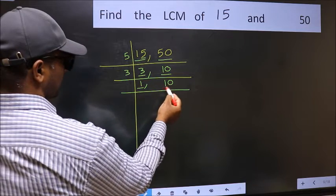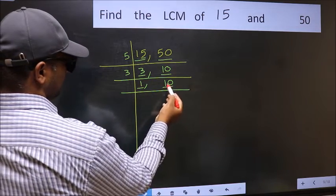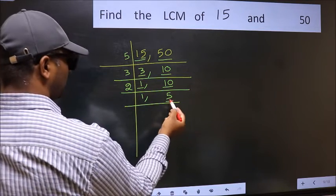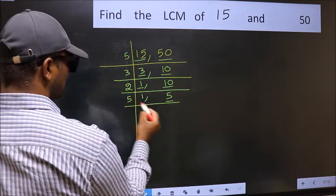So focus on the next number, 10. 10 is two times five. Now here we have 5. 5 is a prime number, so 5 times 1 is 5.